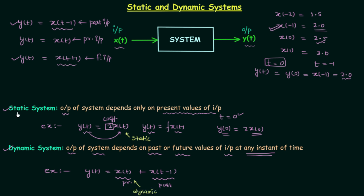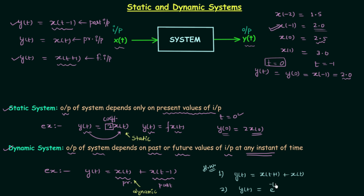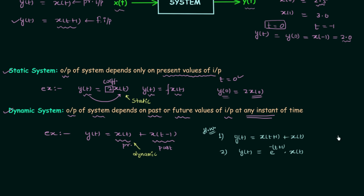We are not done yet, as we need to solve examples covering all possibilities. In this lecture I will solve two examples, and in the coming lectures we will solve more. The first example — y(t) = x(t+1) + x(t) — is a homework problem for you. For problem 2, y(t) = e^(−(t+1)) · x(t). This question is important because you might mistakenly see t+1 and immediately say the output depends on future input, making the system dynamic.